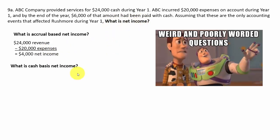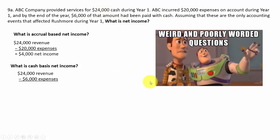Under cash basis, all we care about are revenues received in cash and expenses paid in cash. Revenue is $24,000 cash received and expenses are only $6,000 paid out in cash, so cash-basis net income would be $18,000. There's quite a bit of difference — that's why the question should have specified accrual-basis net income. The answer is $4,000 under accrual.